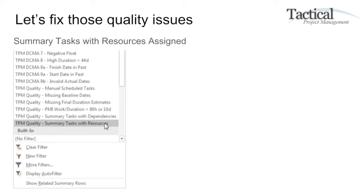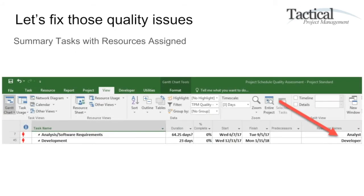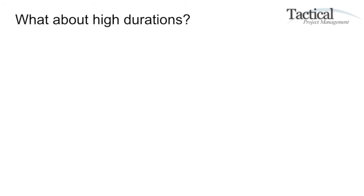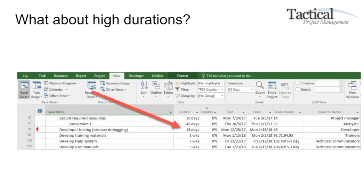So let's go ahead and try to fix some of those quality issues. If you click on the filter that identifies the summary tasks with resources assigned, it instantly filters out those quality issues and starts identifying the problem tasks in your project schedule. Within a few quick clicks, you can find the problem as well as resolve it quickly. For high durations, you go to the quality filter for high durations, click on the button, and instantly it will filter out and identify those tasks that have high durations.